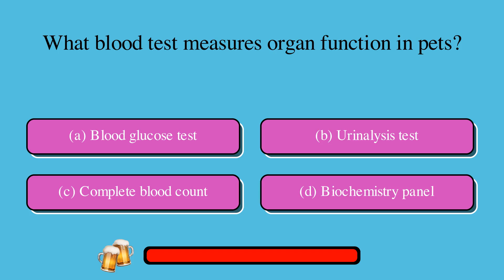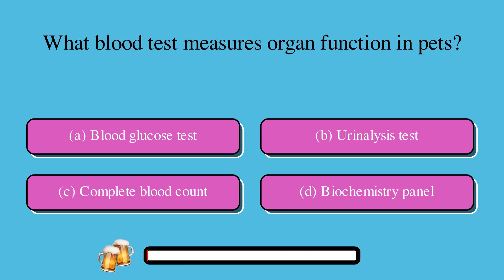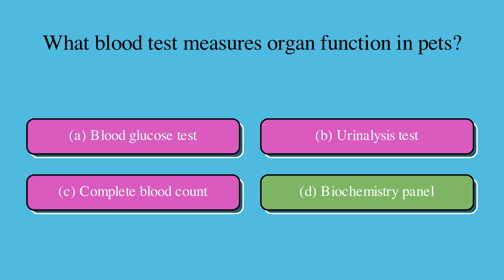What blood test measures organ function in pets? A. Blood glucose test, B. Urinalysis test, C. Complete blood count, or D. Biochemistry panel. The correct answer is D. Biochemistry panel.